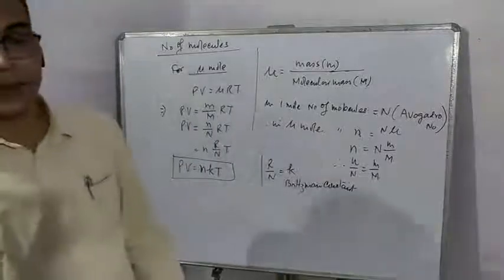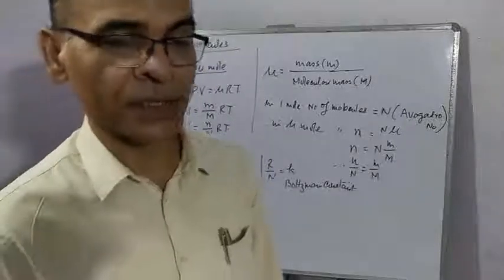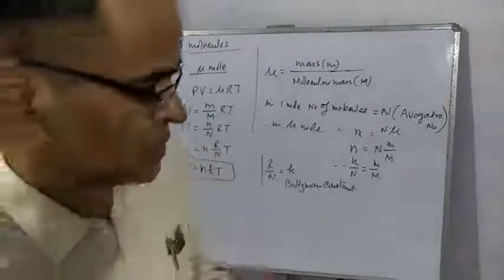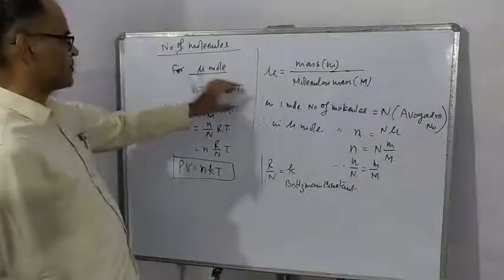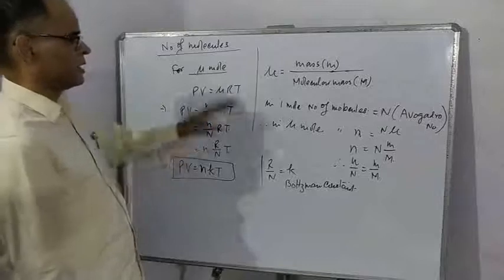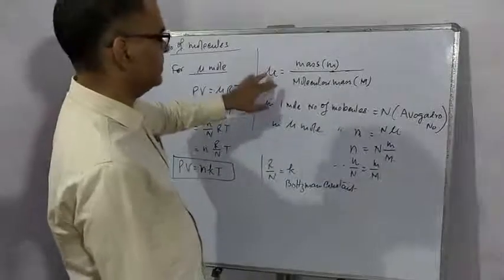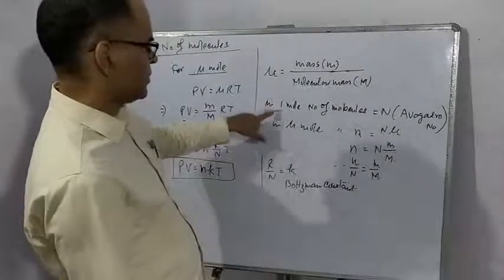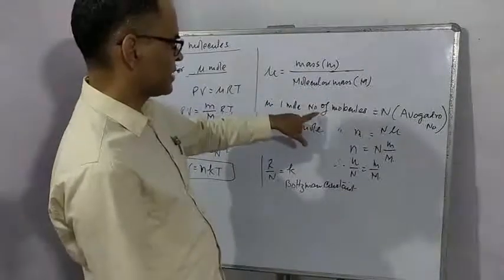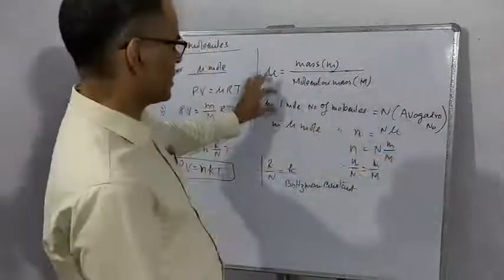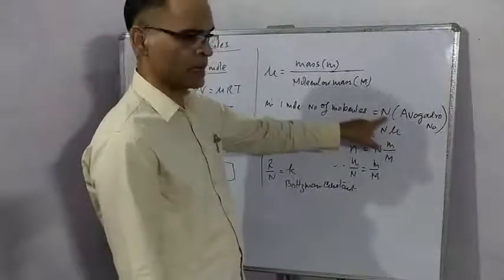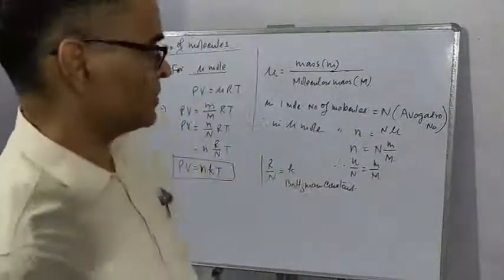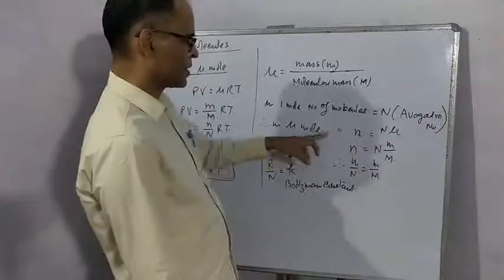Now we will find number of molecules in given volume of a gas at given temperature and pressure. We have just derived for mu mole of gas, we can write PV is equal to mu RT. Number of moles is mass of gas upon molecular mass. In one mole of gas, number of molecules is N, Avogadro's number: 6.023 into 10 to the power 23 per mole. Therefore in mu mole, number of molecules will be N mu.